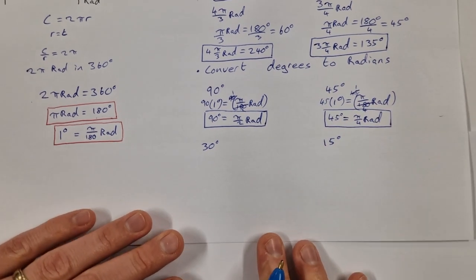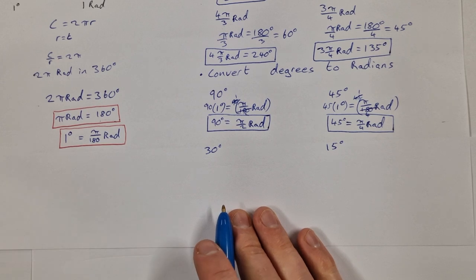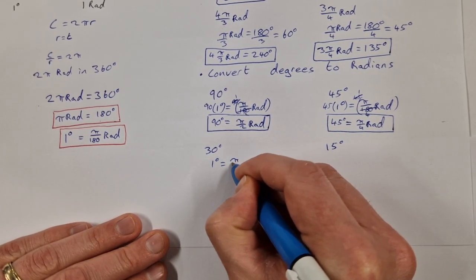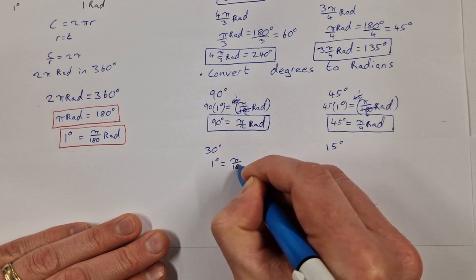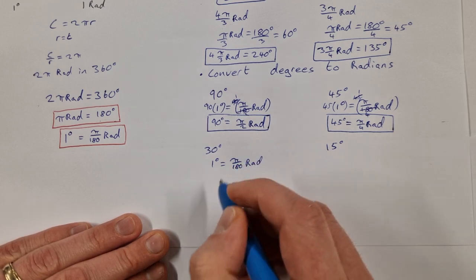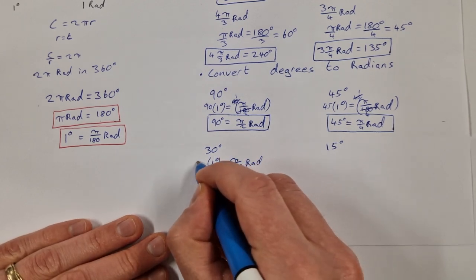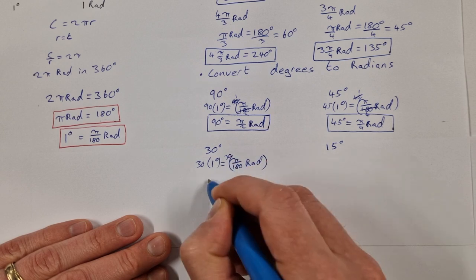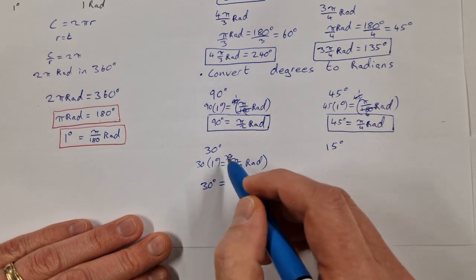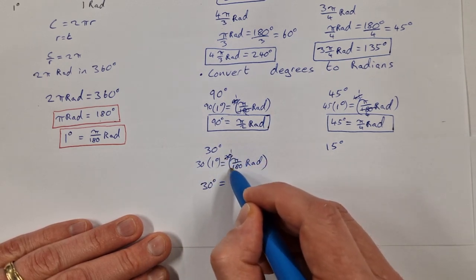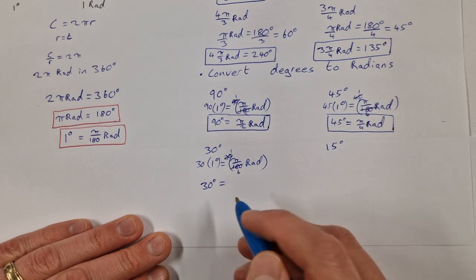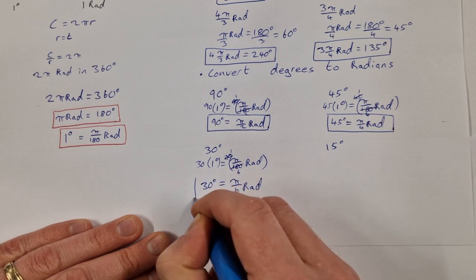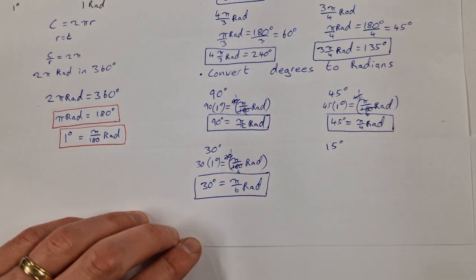Let's do a couple more. For 30 degrees into radians: 1 degree equals π/180 radians. Multiplying both sides by 30 gives 30 degrees equals 30π/180. 30 into 30 goes once and 30 into 180 goes 6 times, so 30 degrees equals π/6 radians.